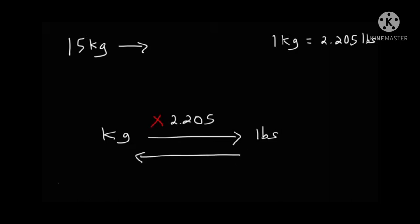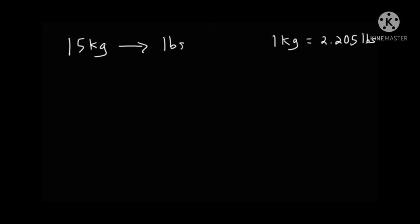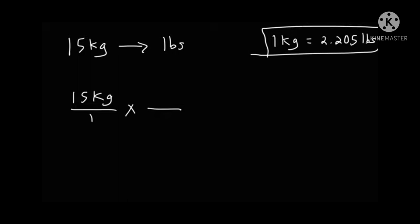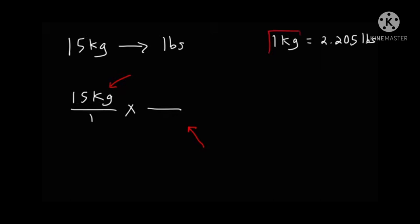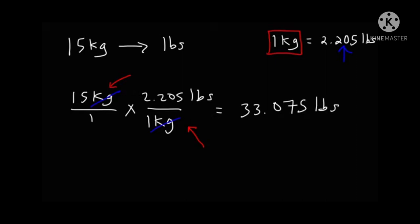If you need to go from pounds to kilograms, divide by 2.205. To show your work: write down what you're given as a fraction, then write another fraction using the conversion factor with matching units canceling. For example, converting 15 kilograms to pounds: place kilograms on the bottom of the second fraction and pounds on top. So 15 times 2.205 gives 33.075 pounds. For 24 kilograms, 24 times 2.205 equals 52.92 pounds.